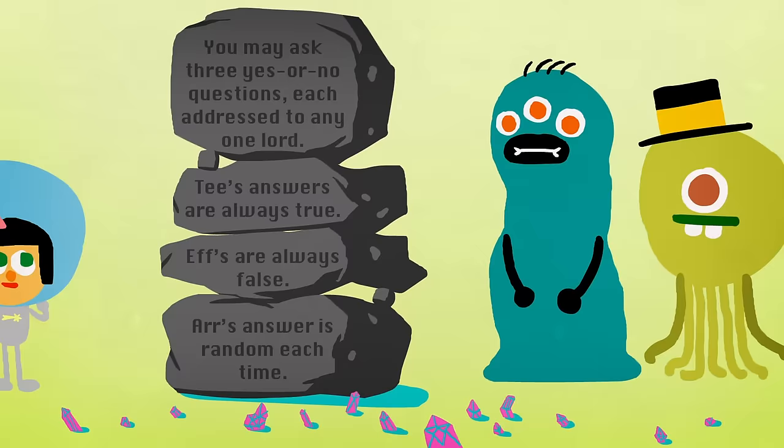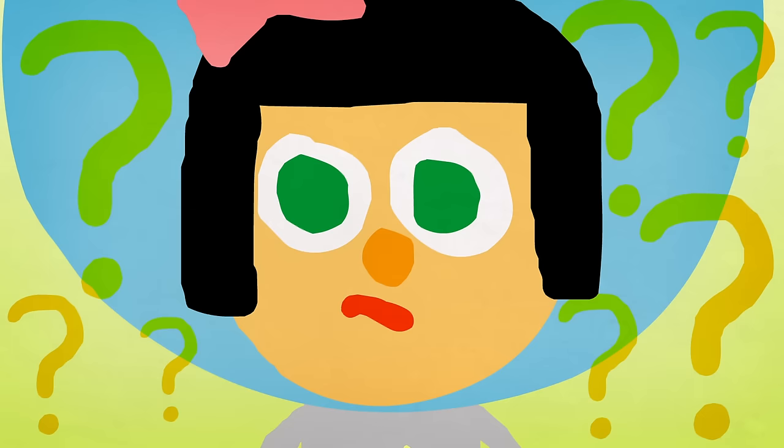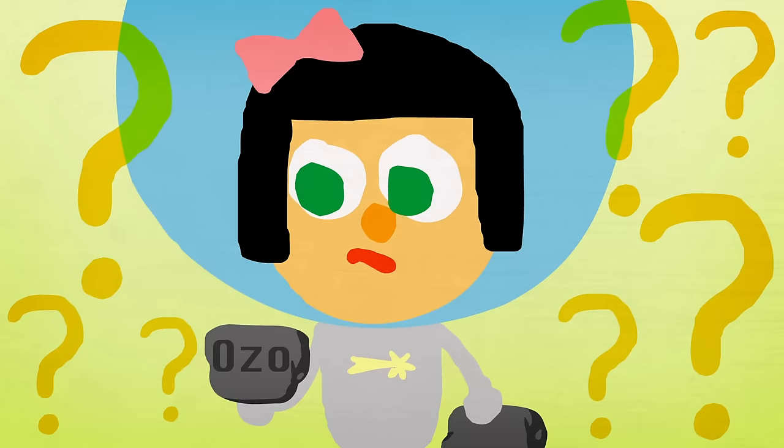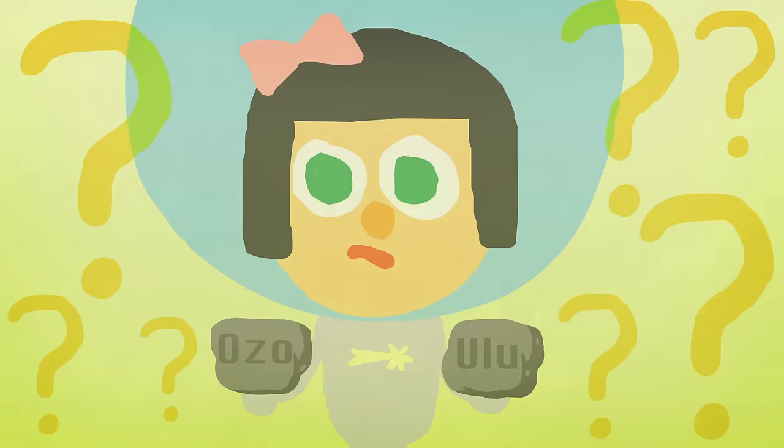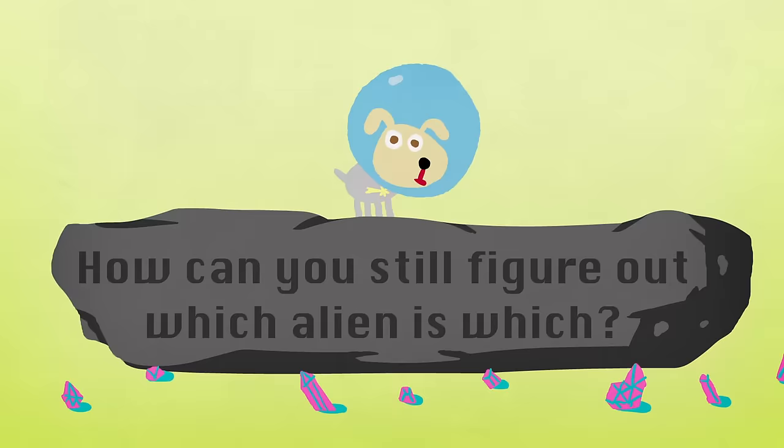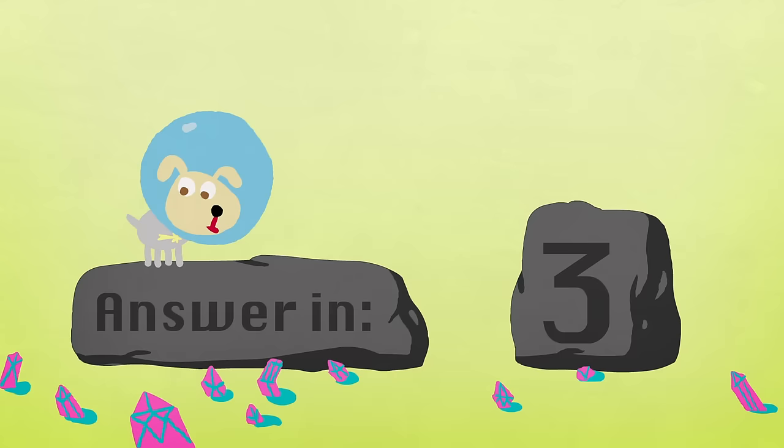From an inscription, you learn that you may ask three yes-or-no questions, each addressed to any one lord. T's answers are always true, F's are always false, and R's answer is random each time. But there's a problem. You've deciphered the language enough to ask any question, but you don't know which of the two words ozo and ulu means yes and which means no. How can you still figure out which alien is which?